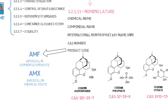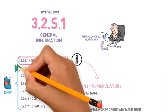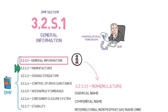This was section 3.2.s.1. In the next video, we will talk about section 3.2.s.2, the section that describes the manufacturer and the manufacturing process. Stay tuned!